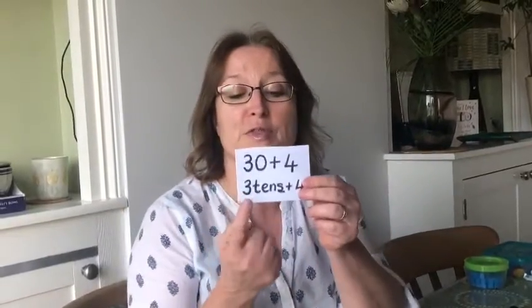Now I'm going to do that the other way round. I'm going to say the two-digit number to you and I'd like you to partition it into how many 10s and how many ones. So the first number is 34. Hopefully you wrote 34. It can be partitioned into 30 add 4.